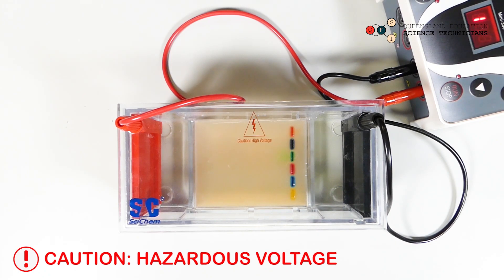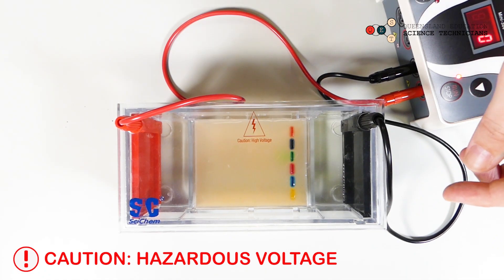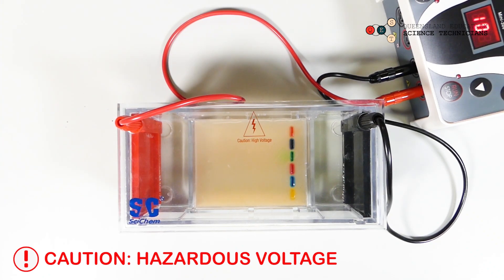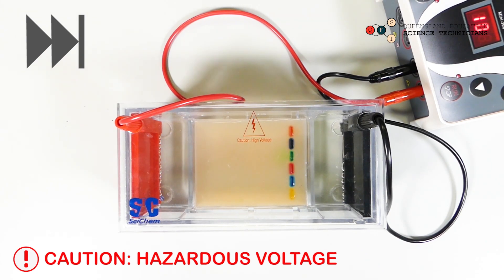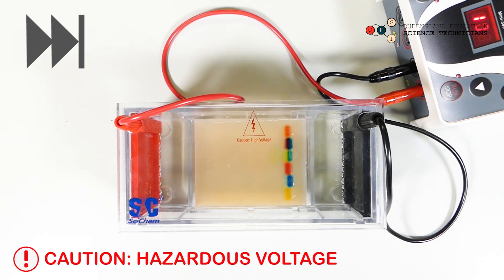Just make sure that the voltage is set to 100, which it is. And we'll press run. You can tell that it's working because you'll start to see bubbles forming at the cathode and also at the anode.